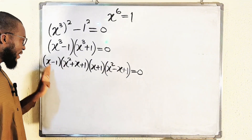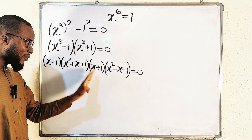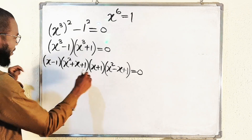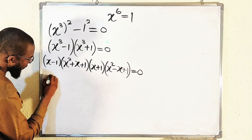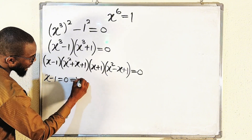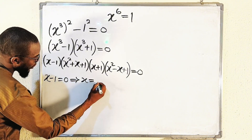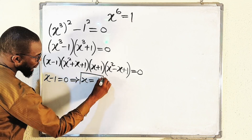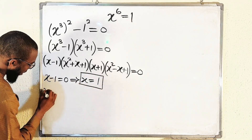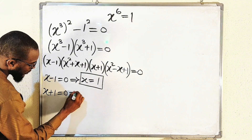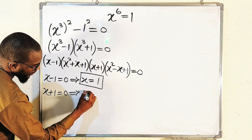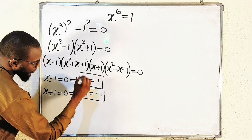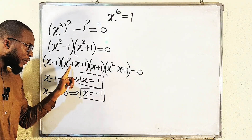Setting each factor equal to zero, starting with the two linear factors: if x minus 1 = 0, then x = 1 — that's our first solution. If x plus 1 = 0, then x = negative 1 — that's our second solution. Now we move to the quadratic equations.